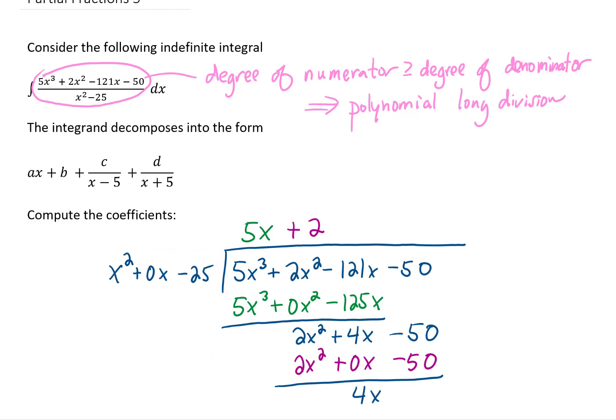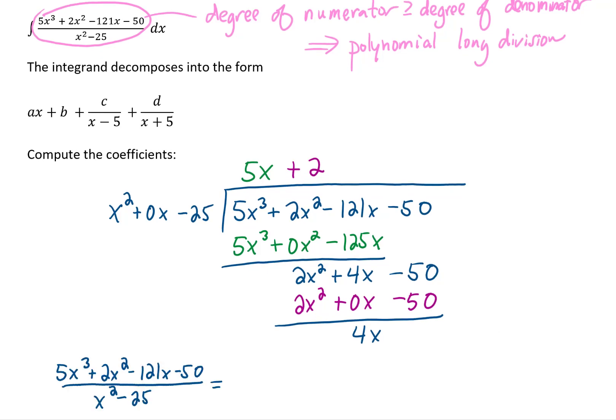What just happened there? Well, by doing this polynomial long division, we just found out that we can rewrite the original integrand as the quotient, which is 5x plus 2, plus the remainder, which we got was 4x, divided by the original denominator. That's what we wanted out of this polynomial long division.